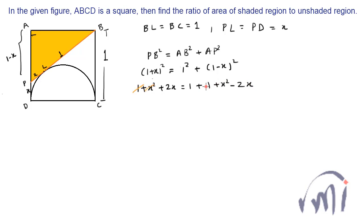This 1 plus X square over here and this 1 plus X square over here will cancel each other and if I bring this 2X to the left hand side, 4X will be equal to 1 or you can say X is equal to 1 by 4.